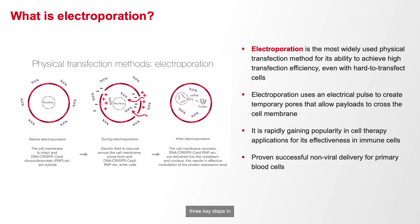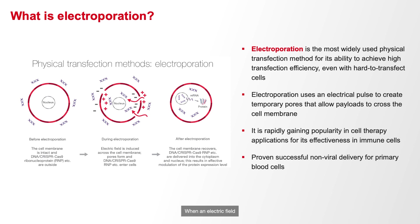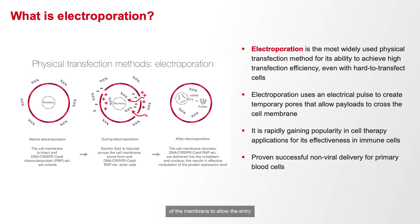There are three key steps in the electroporation process. Before electroporation, the cell membrane is intact and impermeable to large molecules such as DNA or RNA. The cells are typically suspended in an isotonic buffer maintaining their physiological conditions at this time. When an electric field is applied to the cells, it induces a transient destabilization of the cell membrane and creates temporary pores in the phospholipid bilayer of the membrane to allow the entry of genetic material.